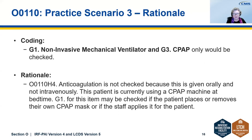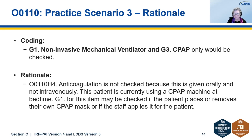The rationale is that although this patient is on an anticoagulant, O110 H4 anticoagulation is not checked because it is given orally and not through the IV. The patient is currently using the CPAP machine at bedtime. G1 for this item may be checked if the patient places or removes their own CPAP, or even if the staff applies it for the patient. You would also check G3 for the CPAP.